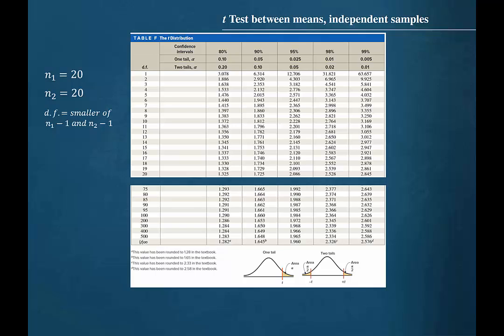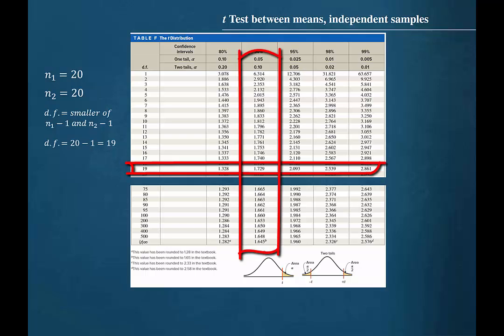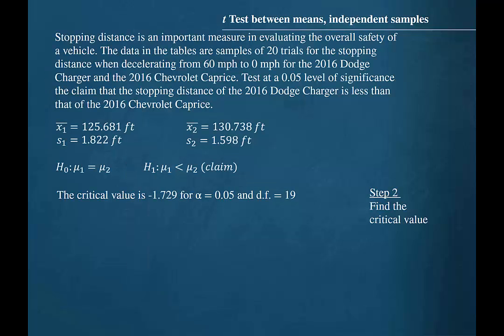The number of degrees of freedom will be one less than the smaller sample size. Since both samples contained 20 subjects, the number of degrees of freedom will be 19. The 19 degrees of freedom row crosses up with the one-tailed alpha equal to 0.05 column at the critical value 1.729. So in this left-tailed test, the critical value will be minus 1.729 for alpha equal to 0.05 and 19 degrees of freedom.